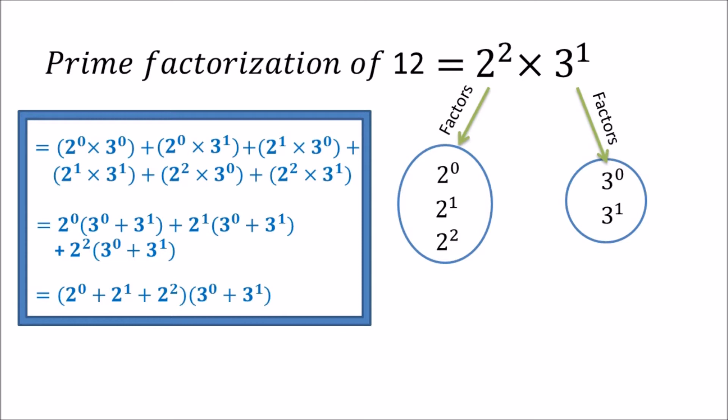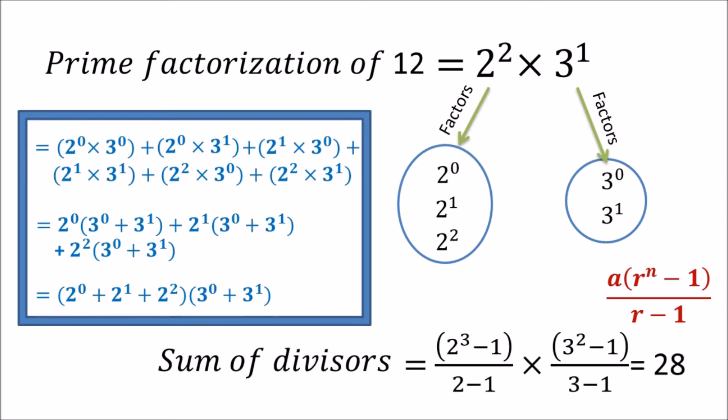Similarly, 3 raised to 0 plus 3 raised to 1 is a geometric progression. We know the formula for the sum of n terms of a GP is a times (r raised to power n minus 1) upon (r minus 1), where a is the first term, r is the common ratio, and n is the number of terms. Applying this formula, the first bracket gives 2 cubed minus 1 upon 2 minus 1, and the second gives 3 squared minus 1 upon 3 minus 1, which calculates to 28.